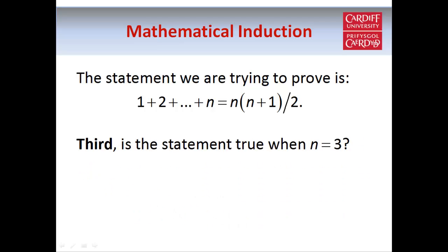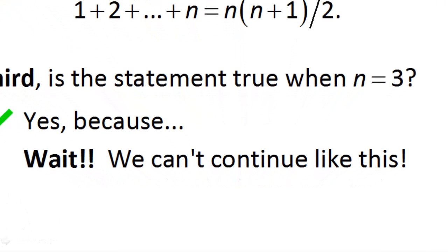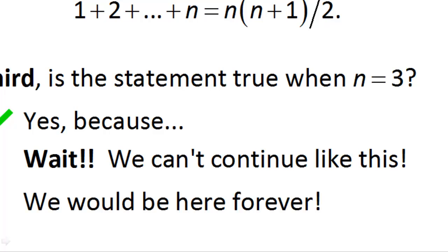We can look at what happens when n equals 3, and you can show that the statement holds in that case as well. But we can't keep going on like this, because it's going to get us nowhere — what we really want to do is prove that the statement holds for all natural numbers n. Since there are infinitely many natural numbers, we would be here forever if we tried to check all of them one by one. So obviously we need a different method.